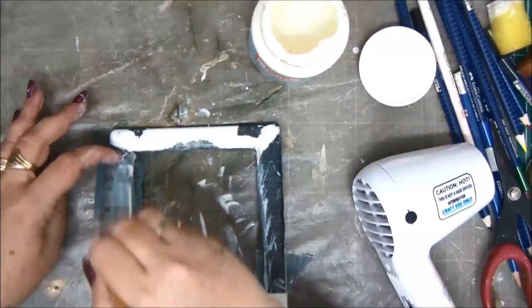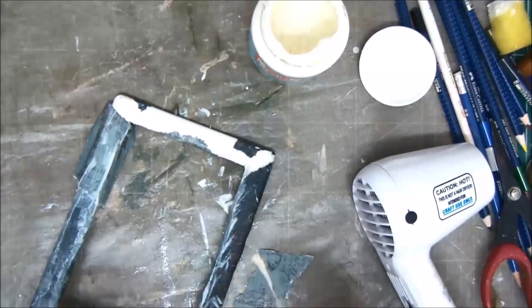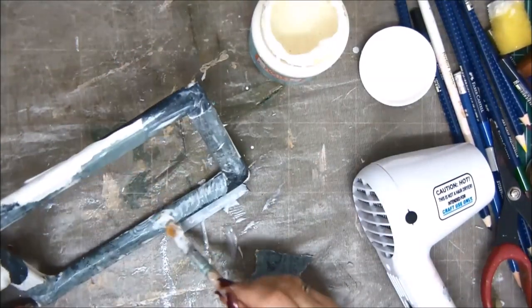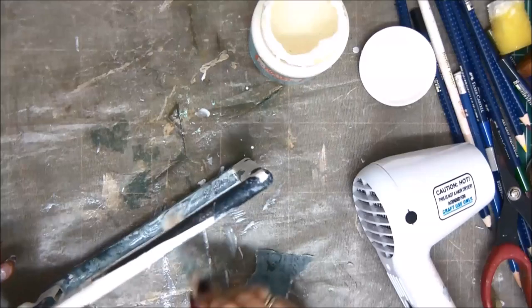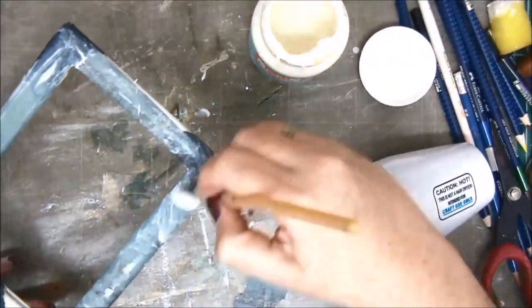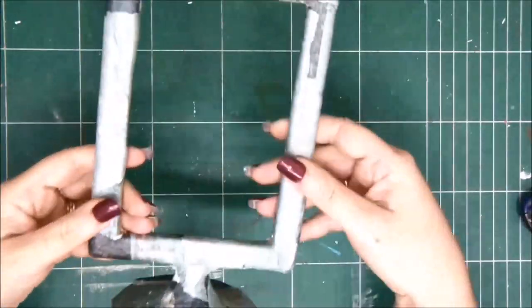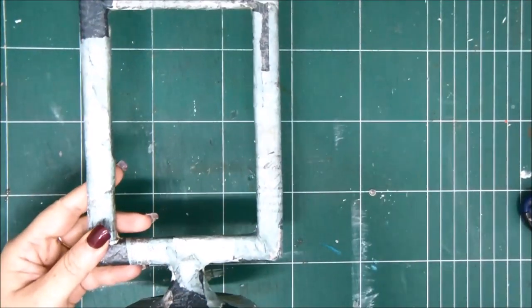Of course you need to use the right glue but gel medium will work on all surfaces. So you just need to wrap your paper pieces around whatever surface you're working on and then cover it with the gel medium on top.